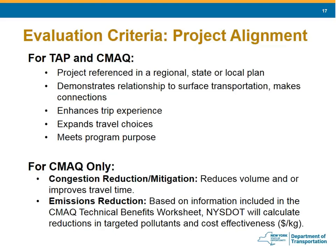You must identify these plans in your project application. The project is well aligned if it demonstrates a relationship to surface transportation and makes connections to the built environment — creating connections between trails, sidewalks to transit, community centers, or schools. The project enhances the trip experience, improves safety, connectivity, or user access such as ADA compliance. The project expands travel choices or improves access for the traveling public, and meets the intended TAP or CMAQ program purpose. For CMAQ, there is an additional need to demonstrate congestion reduction and air quality benefits based on reduction of targeted pollutants such as carbon monoxide, ozone precursors of nitrogen oxides and/or VOCs, and particulate matter.